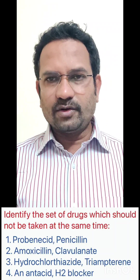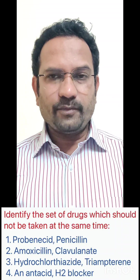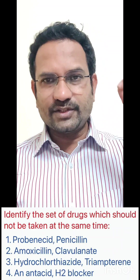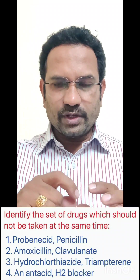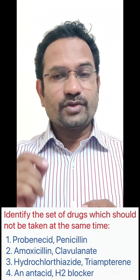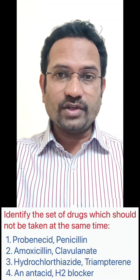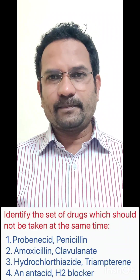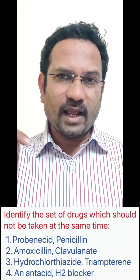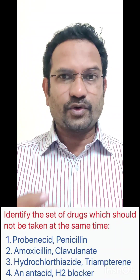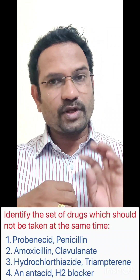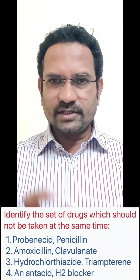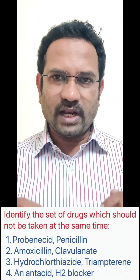Option three is hydrochlorothiazide and triamterene — both are diuretics. Hydrochlorothiazide is a thiazide diuretic; one problem with thiazide and loop diuretics is increased potassium excretion, because sodium is reabsorbed at the collecting tubule, causing potassium loss. To compensate, potassium-sparing diuretics like triamterene are used. Triamterene inhibits sodium channels at the collecting tubule, preventing sodium reabsorption and thereby preventing potassium loss. This combination is also preferred.